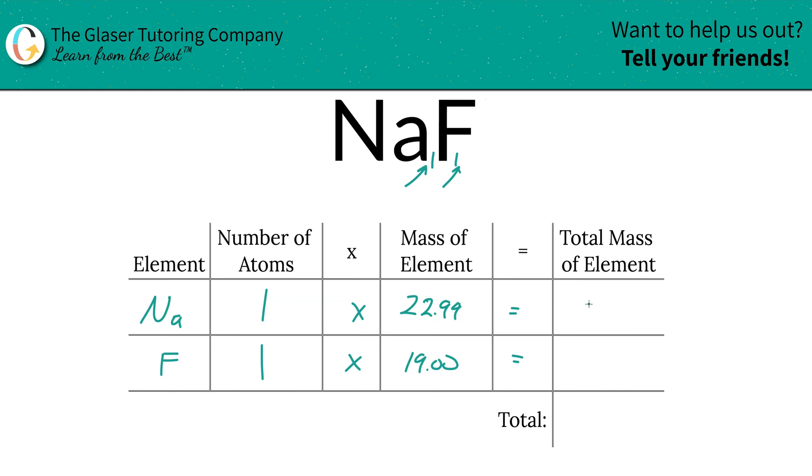Mass of the element, we're simply going to multiply this row across, so that's going to be 22.99 units of mass for sodium, total mass. And then for fluorine, it's fairly simple, right? Hope the math is like this on your test.